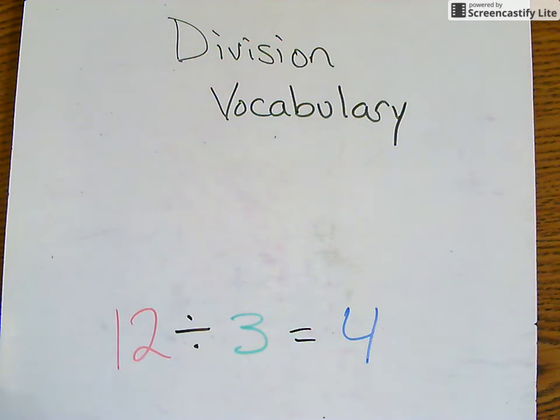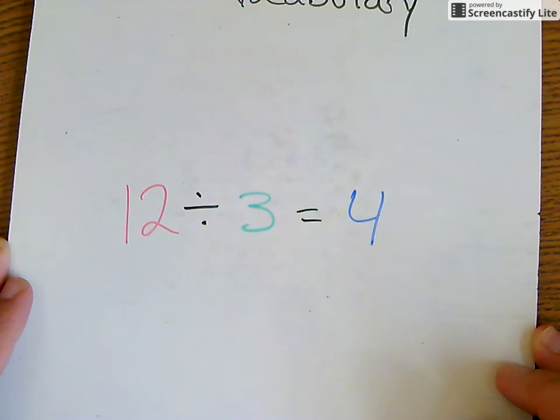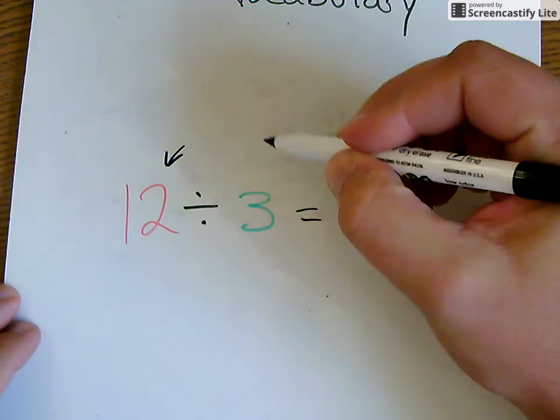Alright, we're going to take a look here at some division vocabulary today. I've got a pretty simple division problem here in front of you. It's 12 divided by 3 equals 4. There are three specific numbers in this problem we're going to identify.